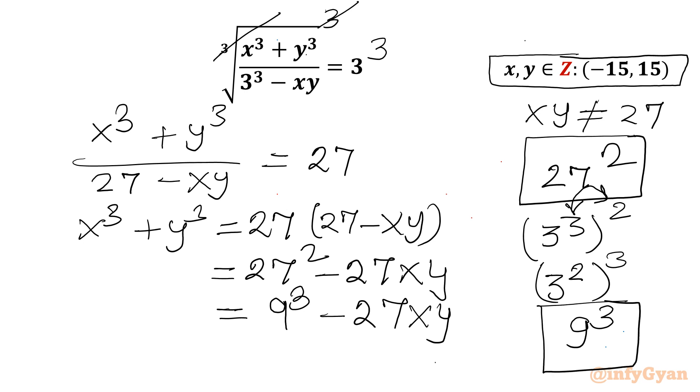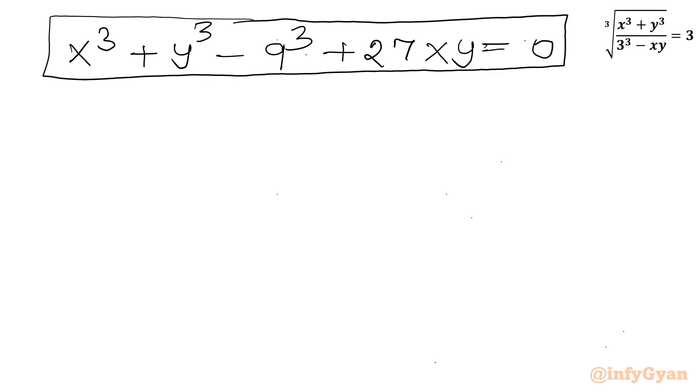Let us take all the terms to LHS. So I can write x cube plus y cube minus 9 cube plus 27 xy equal to 0. This is 1 very important equation for our solution purpose.